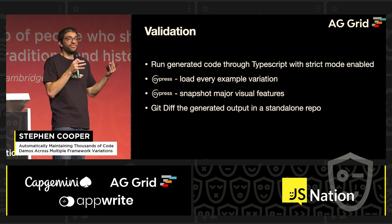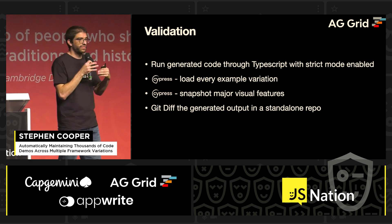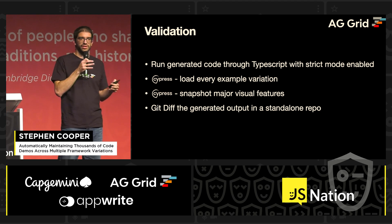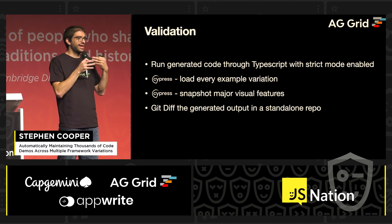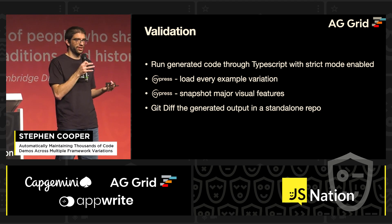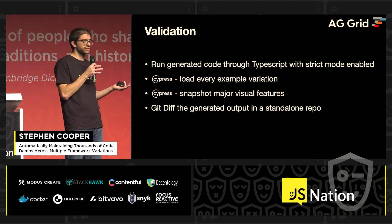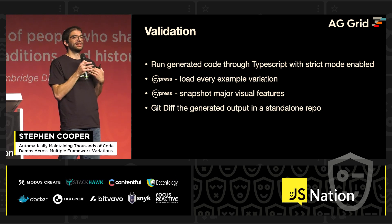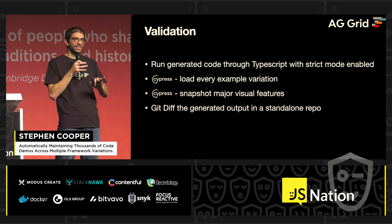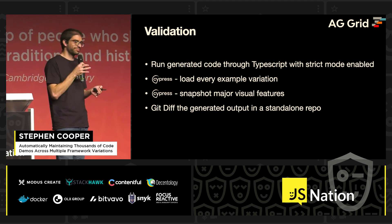To make sure we haven't made mistakes, we validate with TypeScript, hit every single example with Cypress to check for errors, do snapshot testing for visual regressions, and if we're being really careful we can diff the entire repo to make sure we haven't done anything silly.